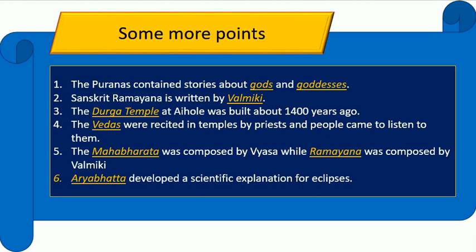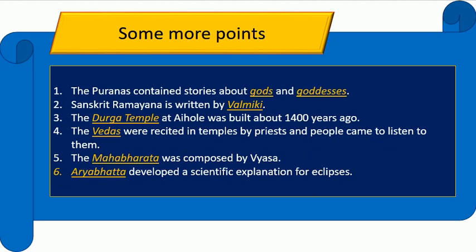The Puranas contain stories about gods and goddesses. The Sanskrit Ramayana is written by Valmiki. The Durga temple at Aihole was built about 1400 years ago. The Vedas were recited in temples by priests and people came to listen to them. The Mahabharata was composed by Vyas, and Aryabhata developed a scientific explanation for eclipses.